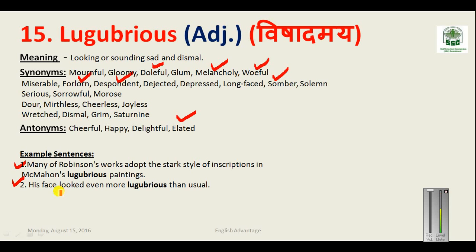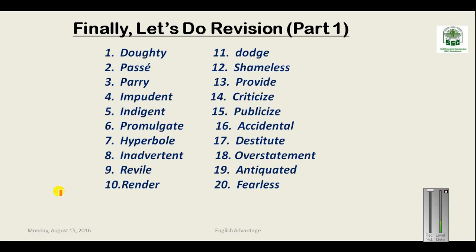I have covered some 200-plus words in this video tutorial. If you watch it from beginning to end multiple times — three or four times — you will definitely grasp all these words. Now let us move to the revision part for your benefit. I have included five parts of revision. Doughty means fearless. Passé is something that is out of fashion, old-fashioned, or antiquated.